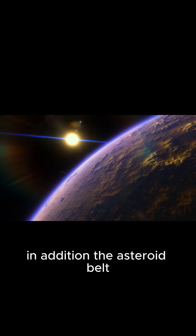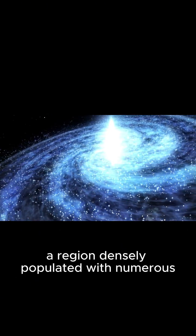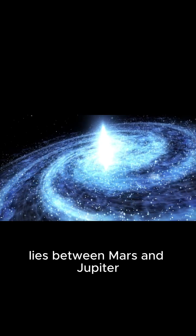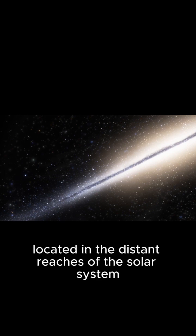In addition, the asteroid belt, a region densely populated with numerous small rocky and metallic objects, lies between Mars and Jupiter. The Kuiper belt and the Oort cloud, located in the distant reaches of the solar system, contain comets and other objects.